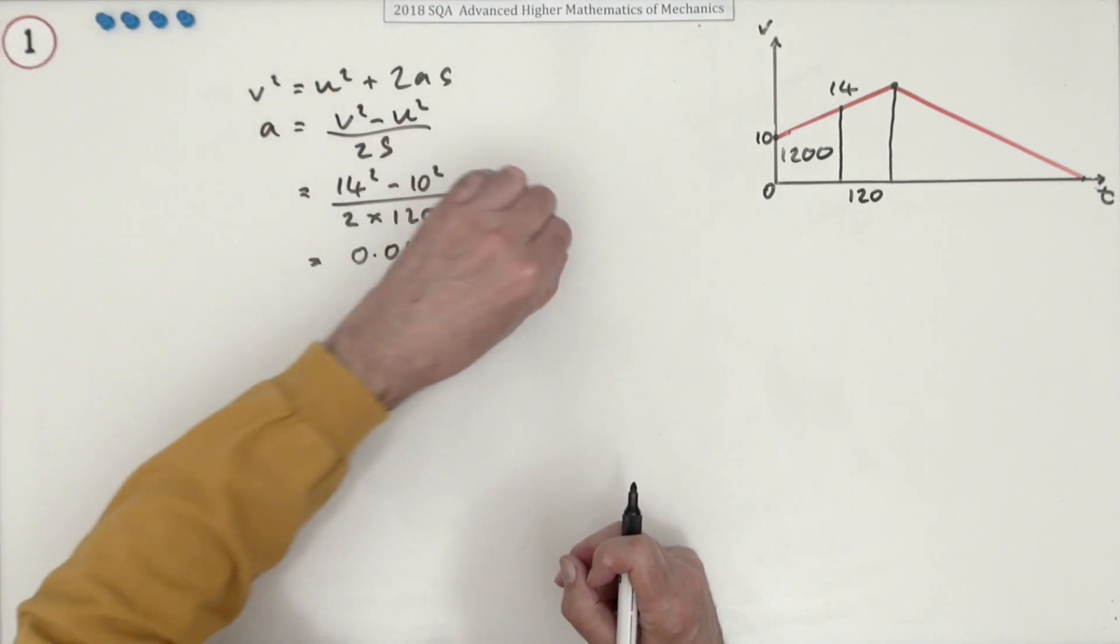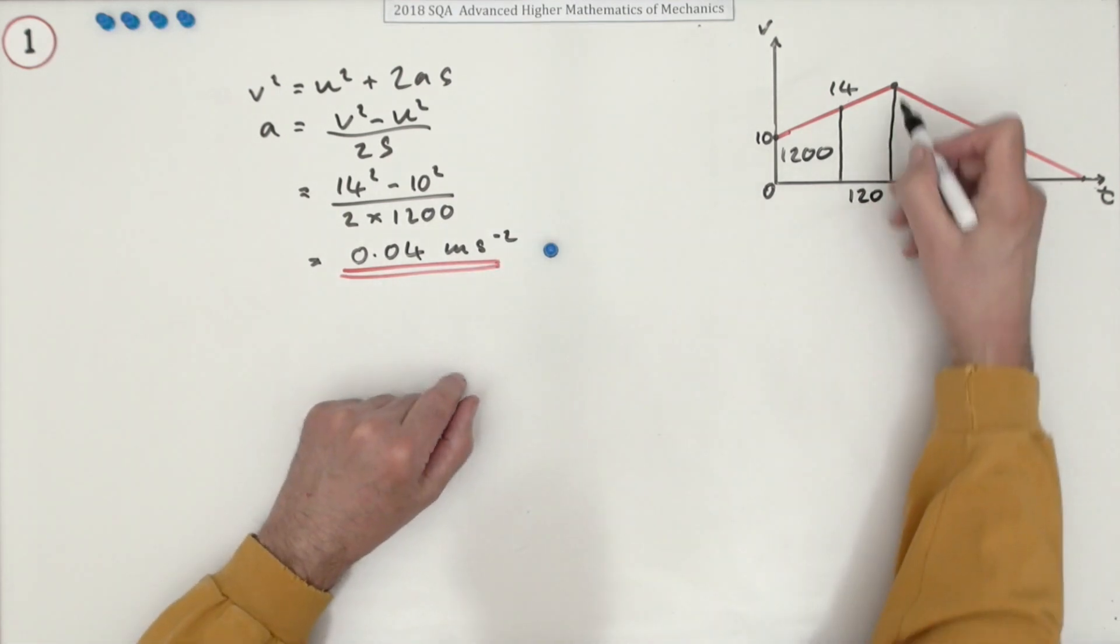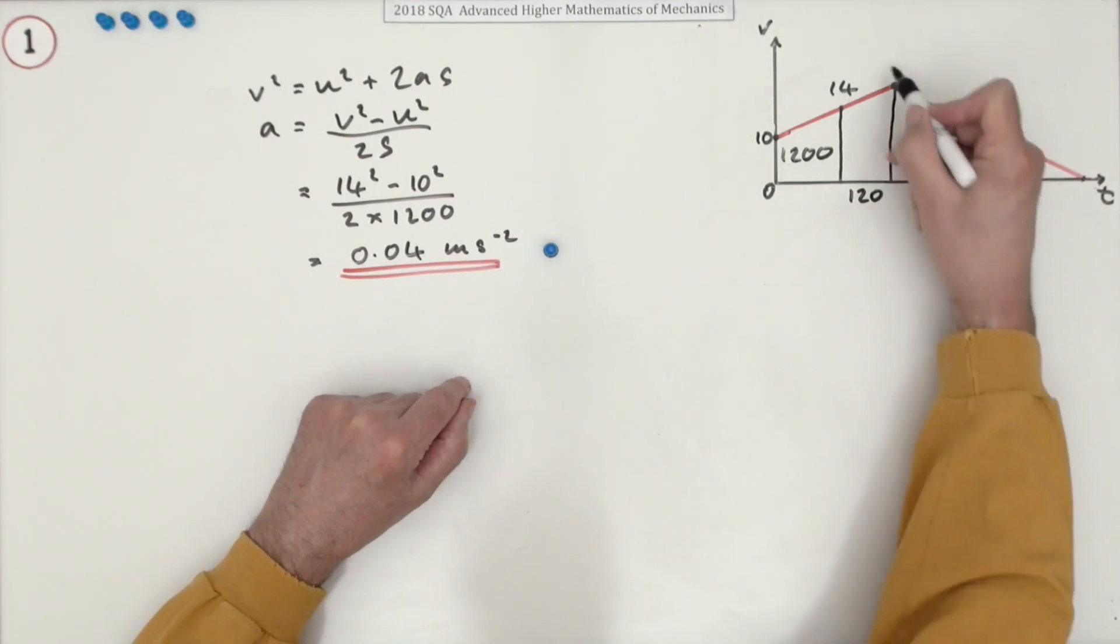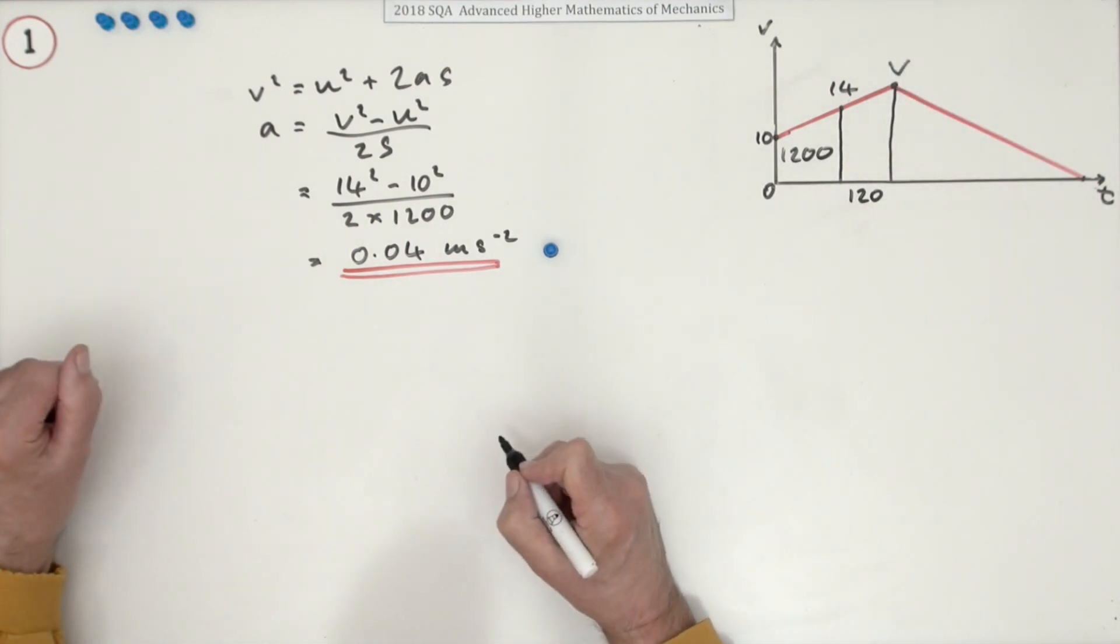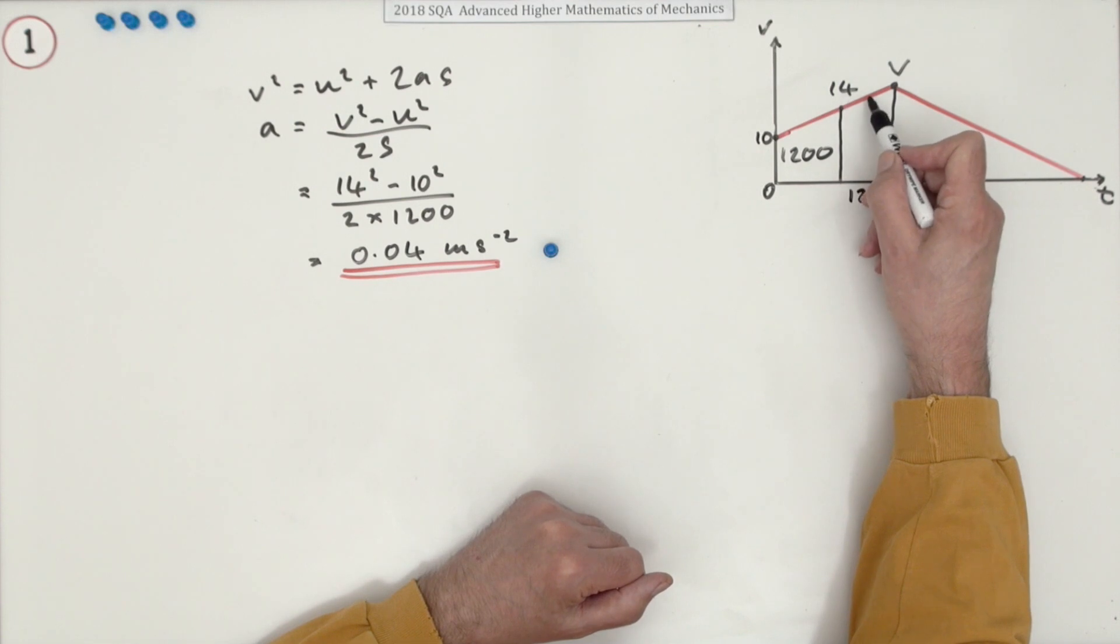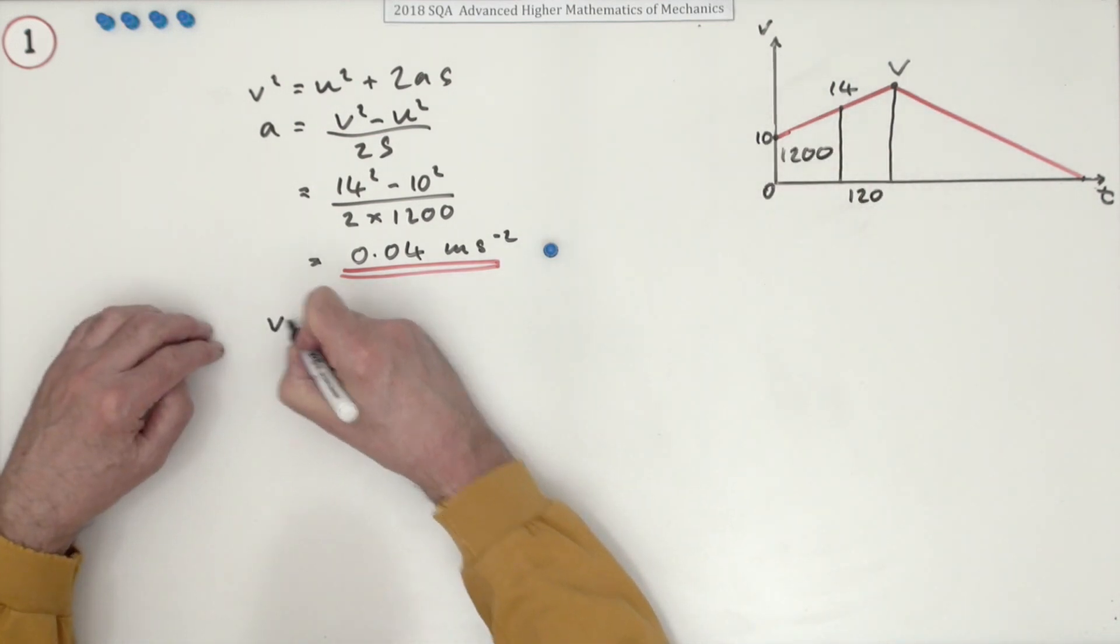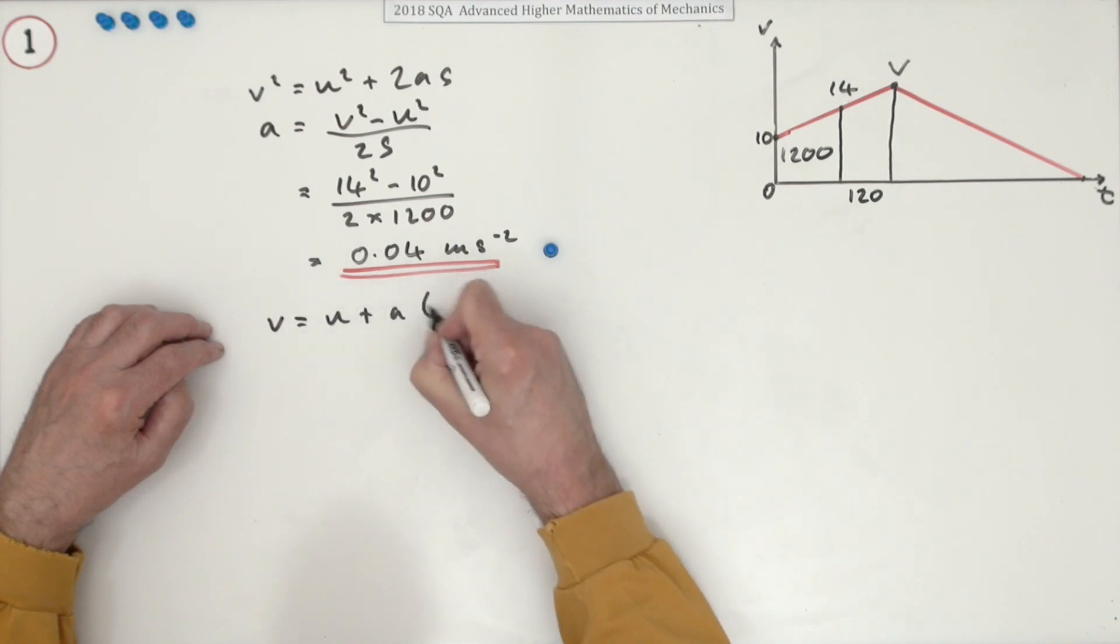Now doing that is the first mark. That means you can now work out this velocity here, this maximum velocity which we'll just call v. And I've got an initial velocity, I've got an acceleration, I've got a time, so that will just be v equals u plus at.